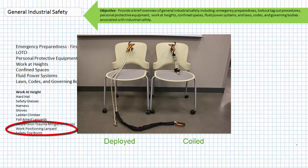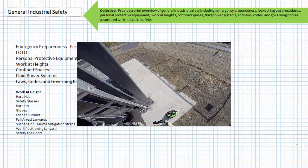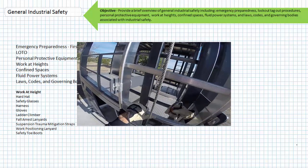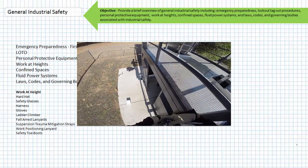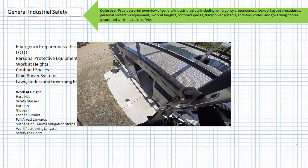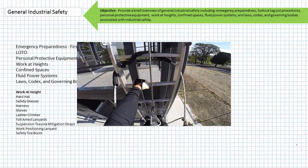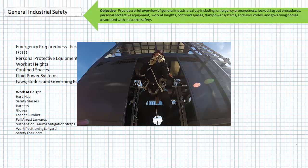The work positioning lanyard is an additional adjustable lanyard used to hold a worker in place while keeping both hands free to work. Here's a clip of a work positioning lanyard being used on a ladder. The work positioning lanyard is not designed for fall arrest purposes.